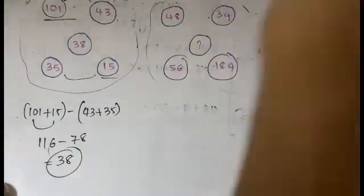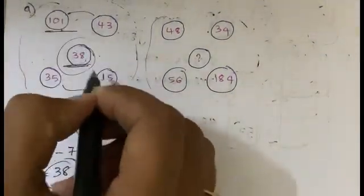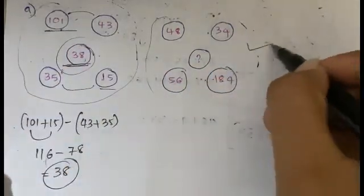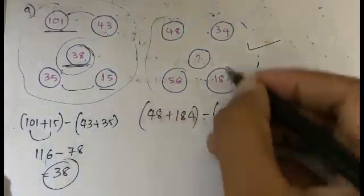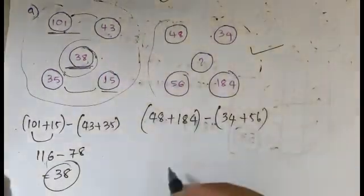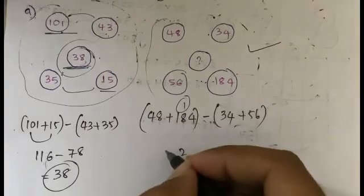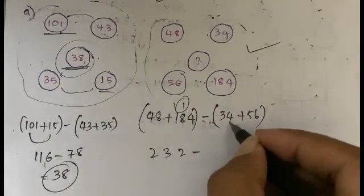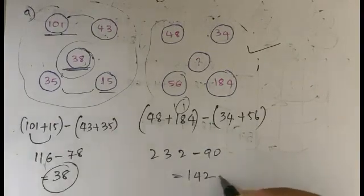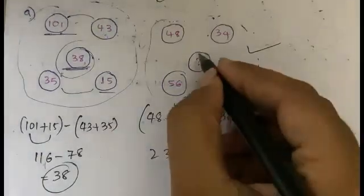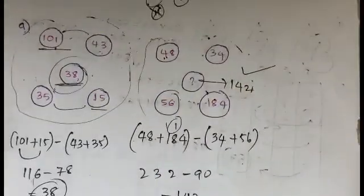So the logic is: add the two diagonal elements on one side, add the two diagonal elements on the other side, then subtract the second sum from the first to get the middle value. Applying the same logic to the second matrix: 48 plus 184 is 232, and 34 plus 56 is 90. So 232 minus 90 gives 142. Therefore 142 is the answer in the middle.